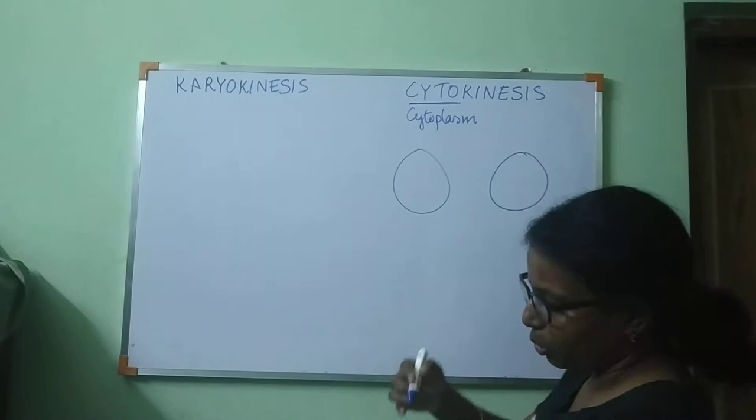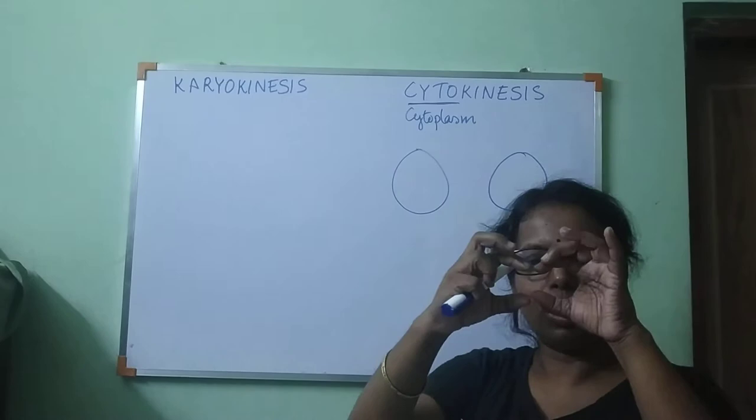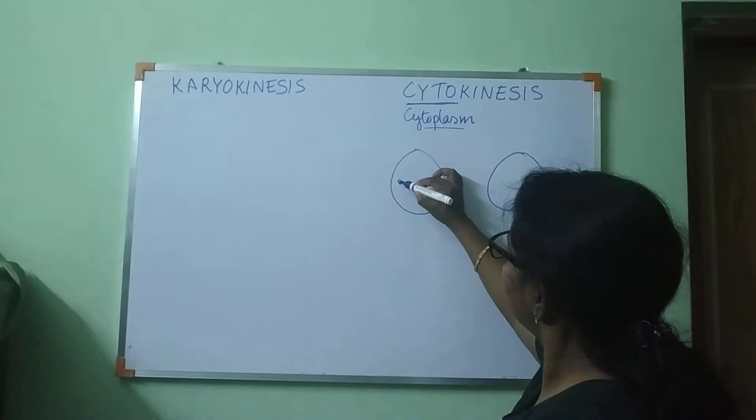In cytokinesis, what happens? The cytoplasm — the furrow deepens and the two cells become separate. So this is division of cytoplasm.